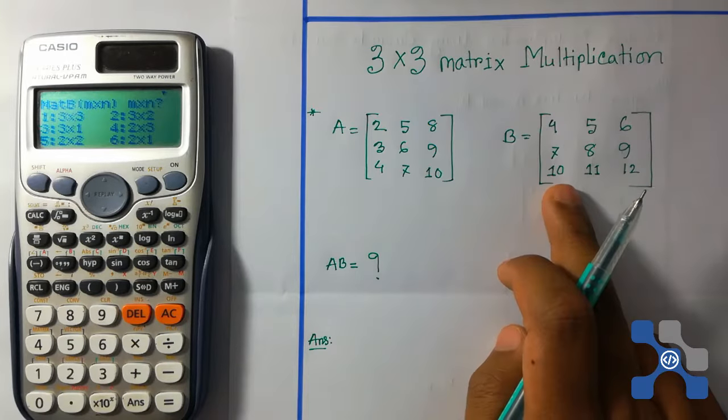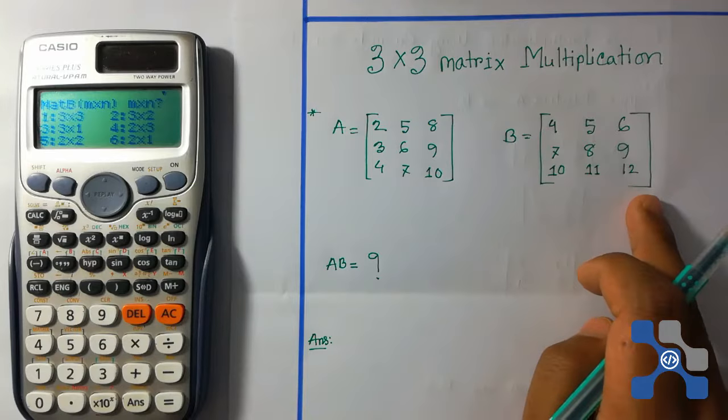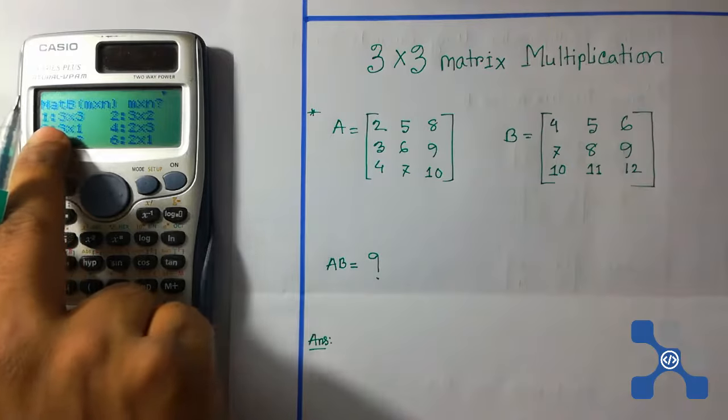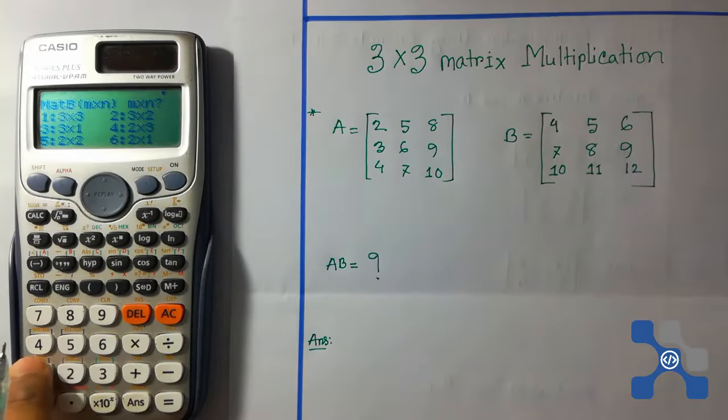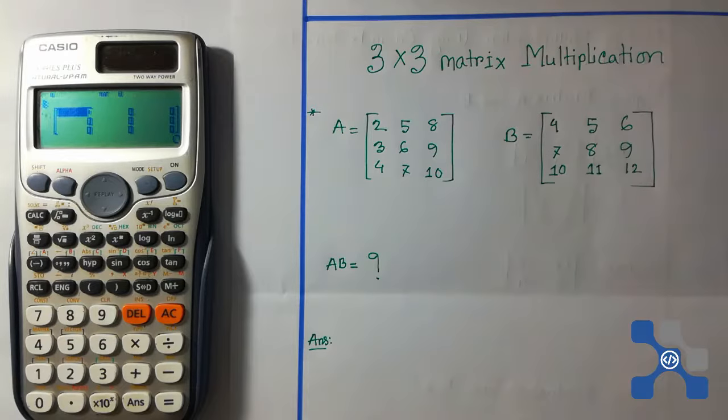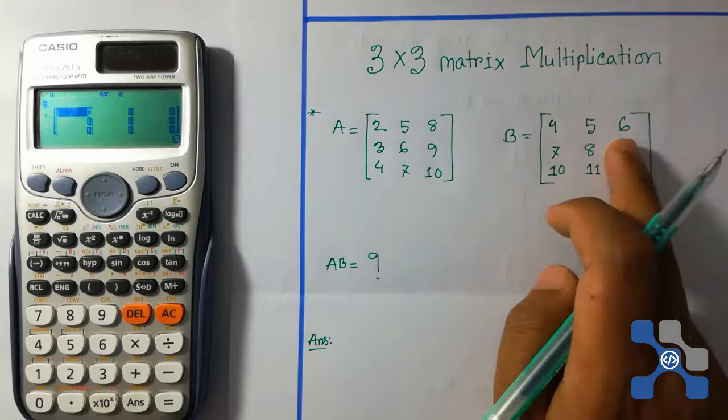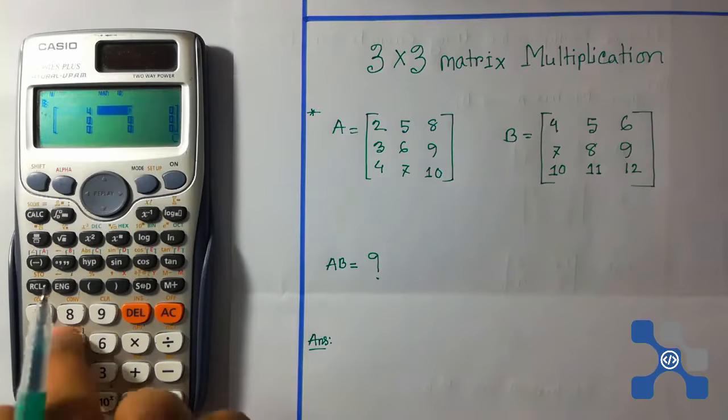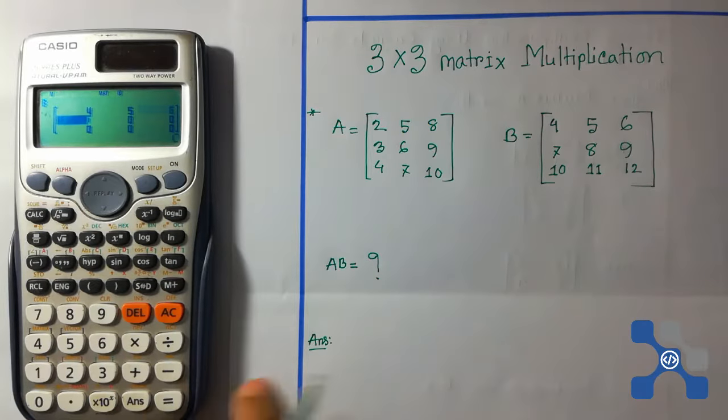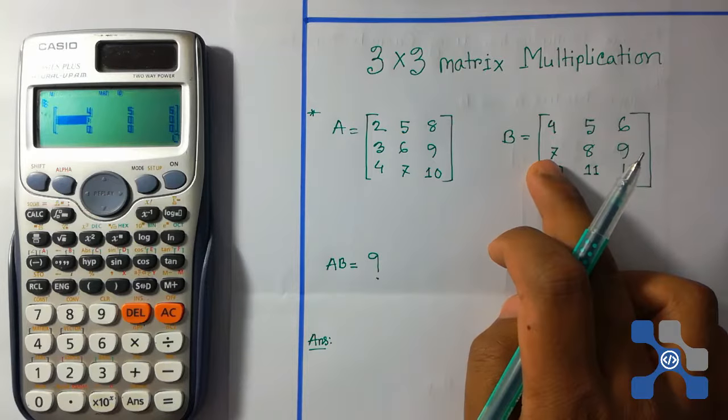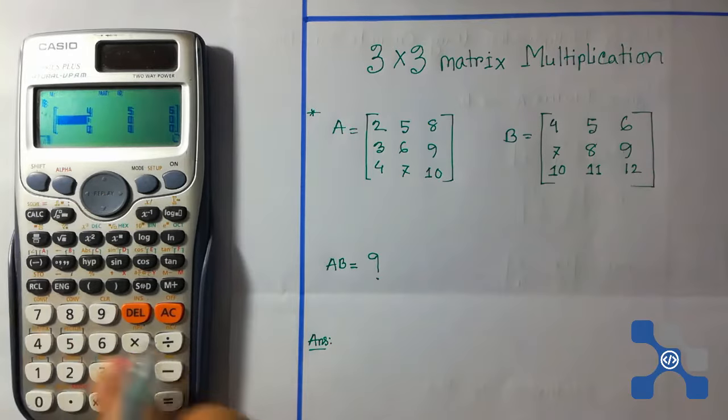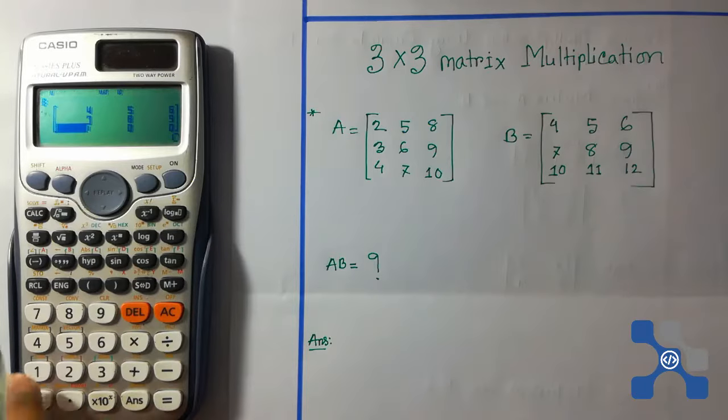Our given B matrix is 3 by 3, so select 1 for 3 by 3. Now load this element. First row is 4, 5, 6. Second row is 7, 8, 9. Third row is 10, 11, 12.